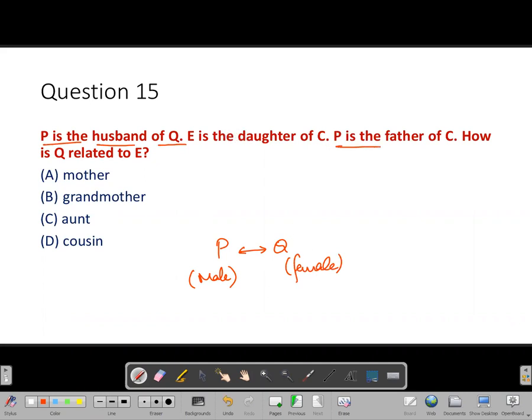Now, it is given P is the father of C. So P and Q, who are married, have a kid C. We don't know the gender of C.